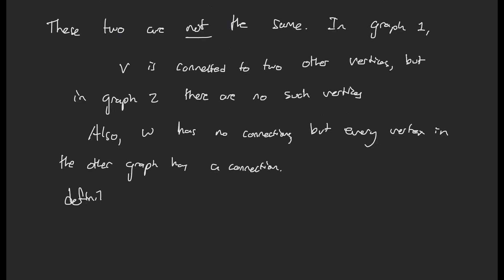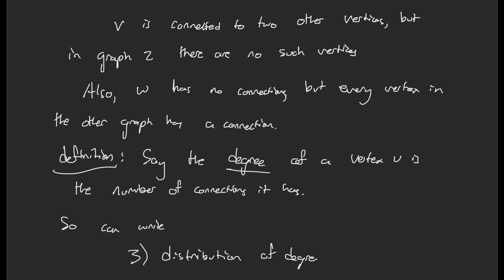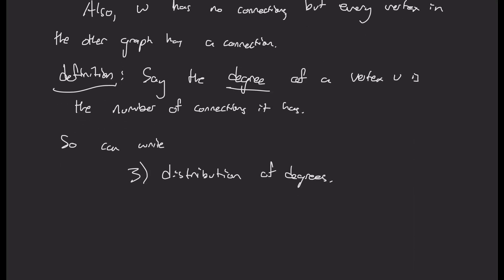Okay, so this leads us to another definition. We say that the degree of a vertex is the number of connections it has. So for example, the degree of V in our last example was two, and the degree of W was actually zero. Okay, so we can add the property to our list that we also care about the distribution of degrees.